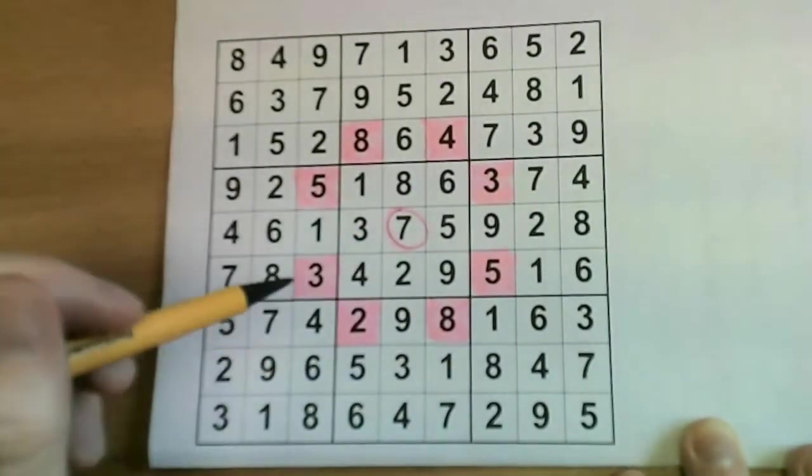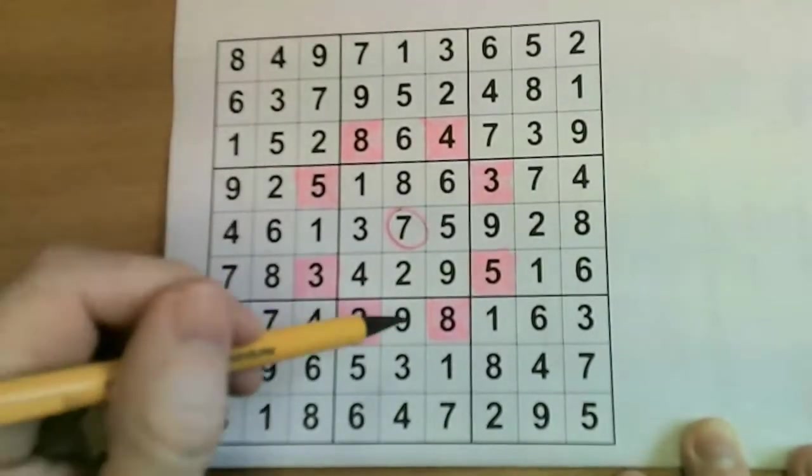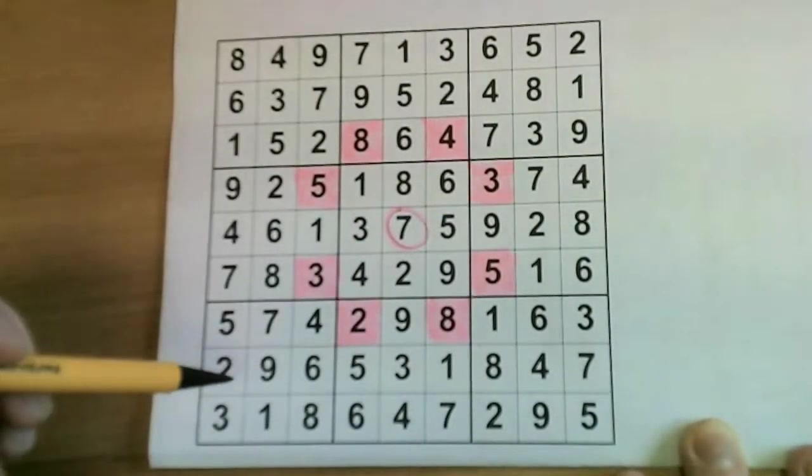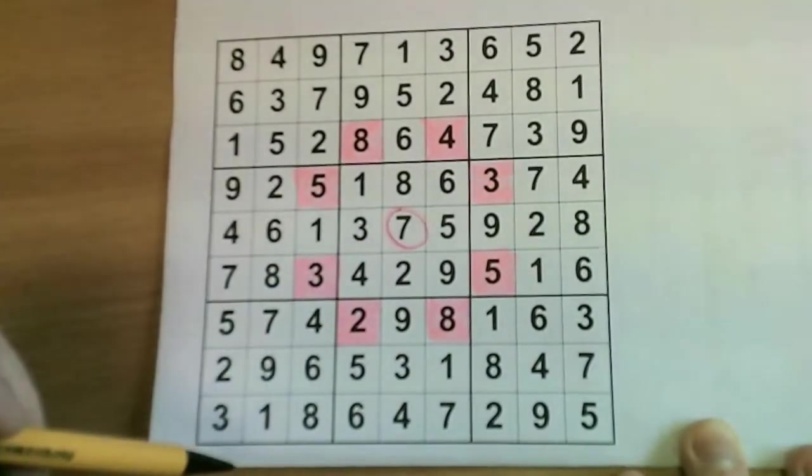So unlike standard Sudoku, where it would be perfectly legal for any of those squares to be a seven, in Anti-Knight Sudoku, none of those squares can be a seven because they are a Knight's move away in chess.